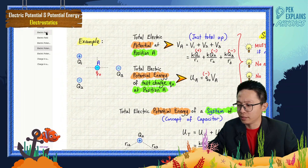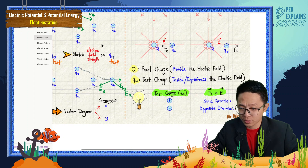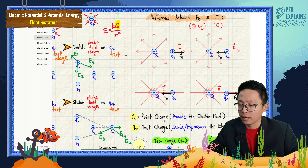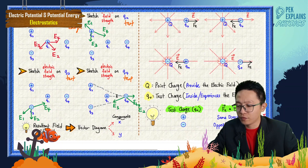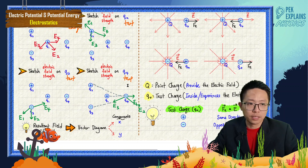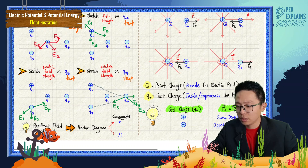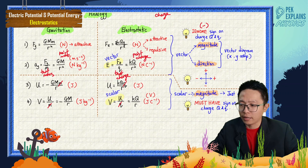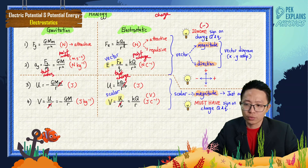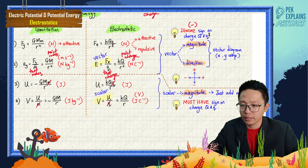Let us look back at electric field and electric force. For electric field, we need to draw vectors E1, E2, E3. You need to do the vector diagram and resolve X and Y components. But for the vector field and force, you need to draw a vector diagram and for the charge, ignore the sign.